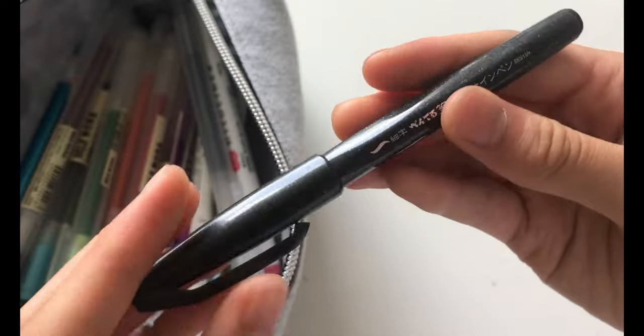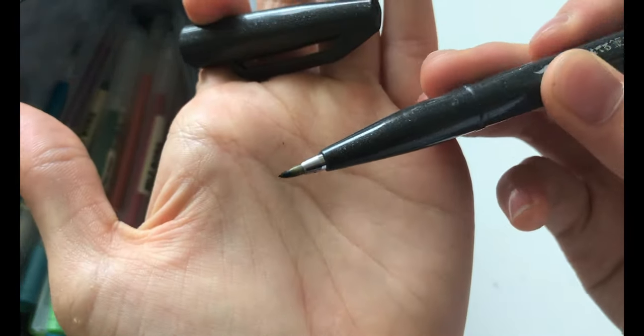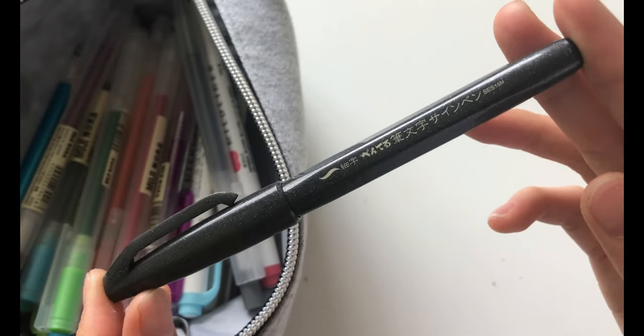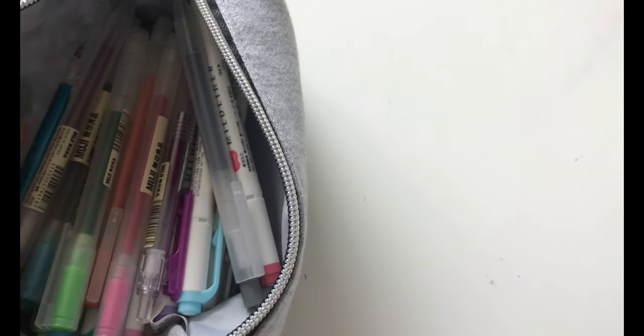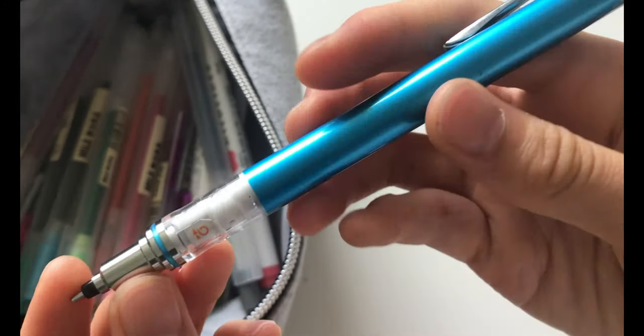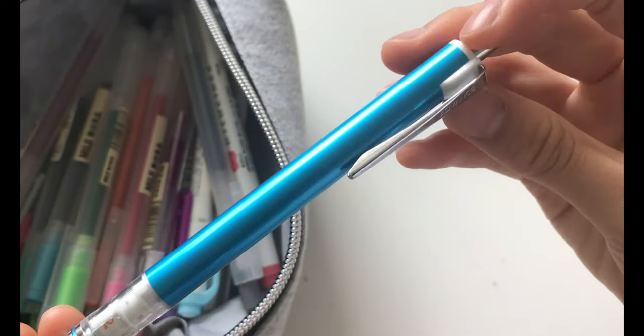The next item is the Pentel sign pen. So this is not the Fude Touch brush pen, but this is also pretty good and this is a bit thicker. The next item is the Uni Kuritoga 0.5 mechanical pencil. So this is probably my favourite mechanical pencil of all time.